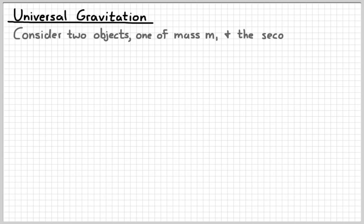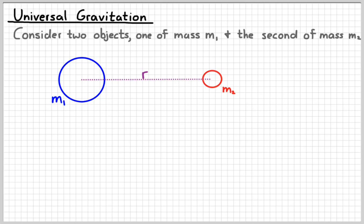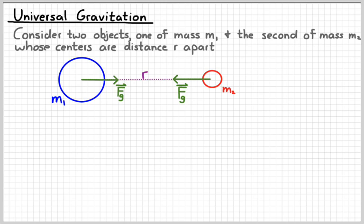So, let's consider two random objects, one of mass M1, the second of mass M2, whose centers are distance r apart. So, there's an attractive force between those two things. And so, we would draw arrows going inward, label those force gravity.